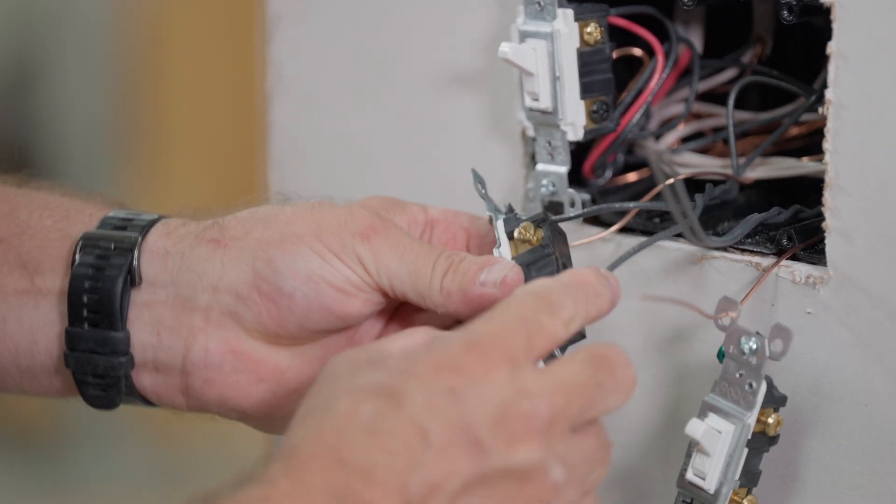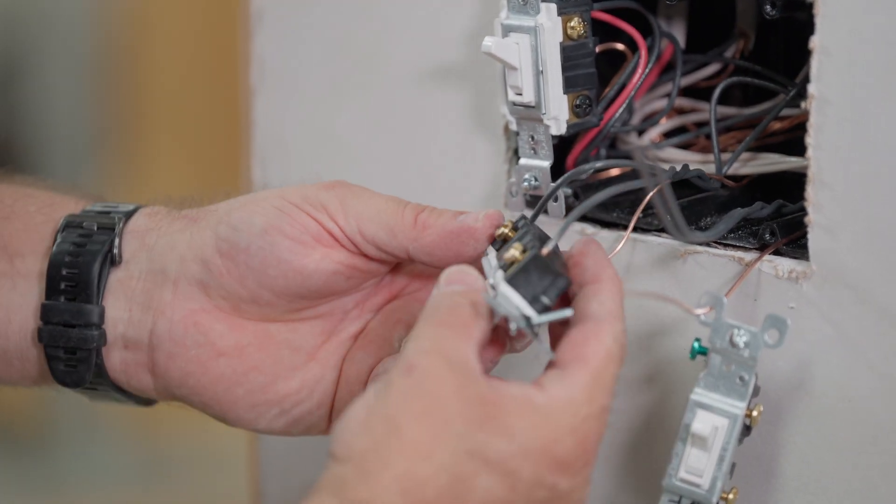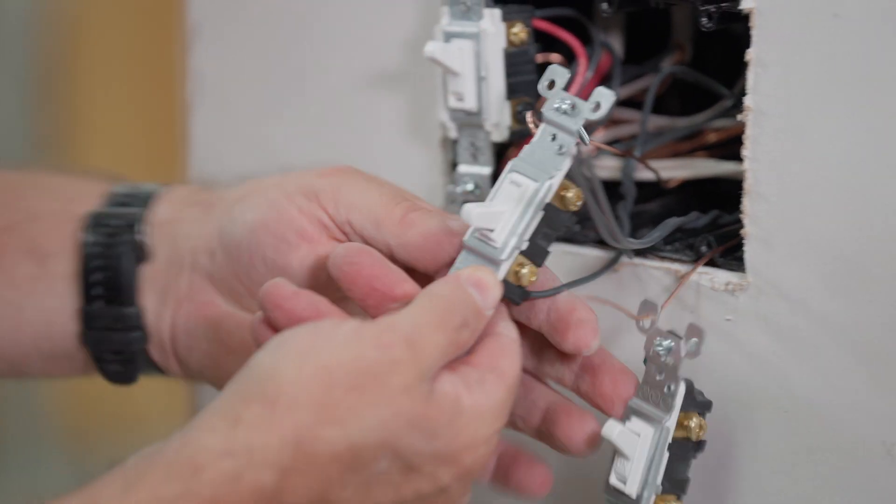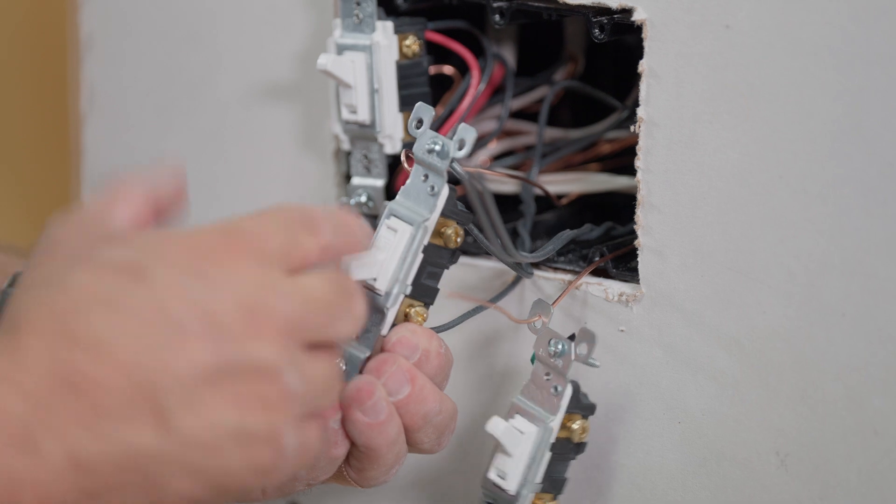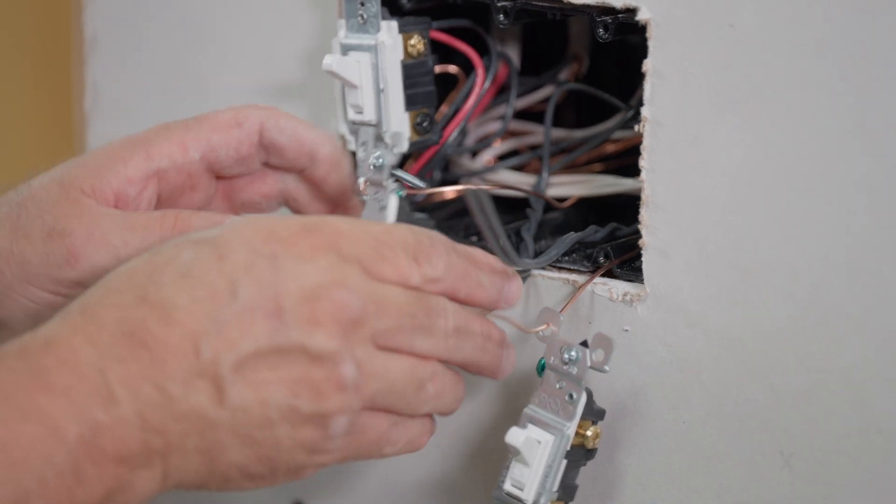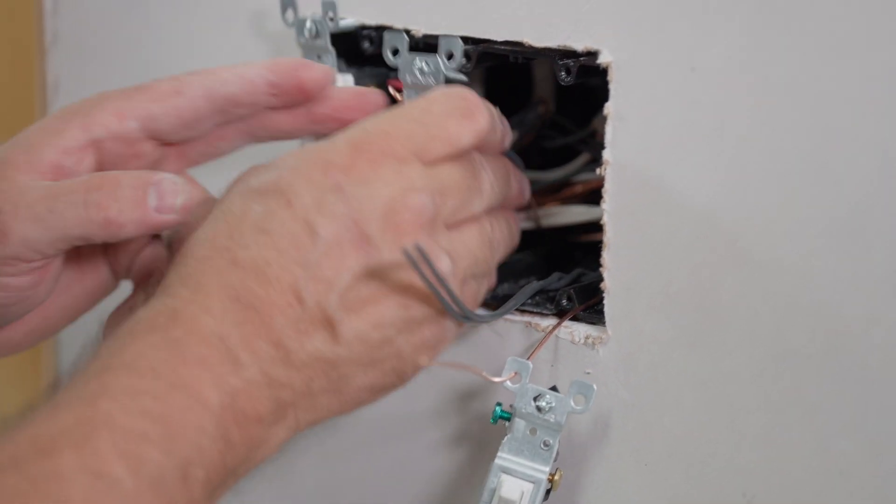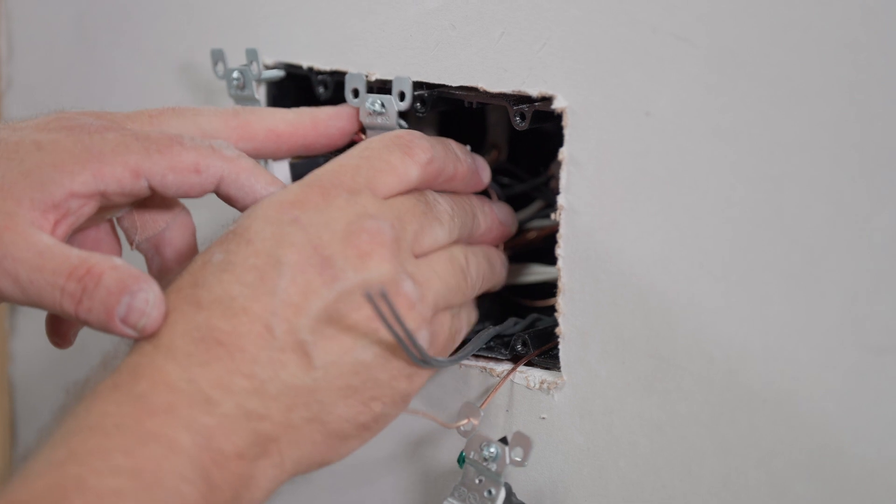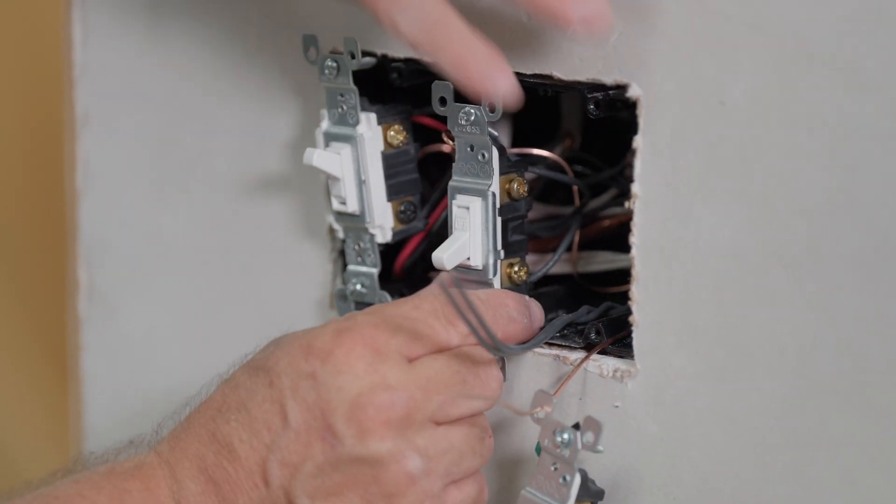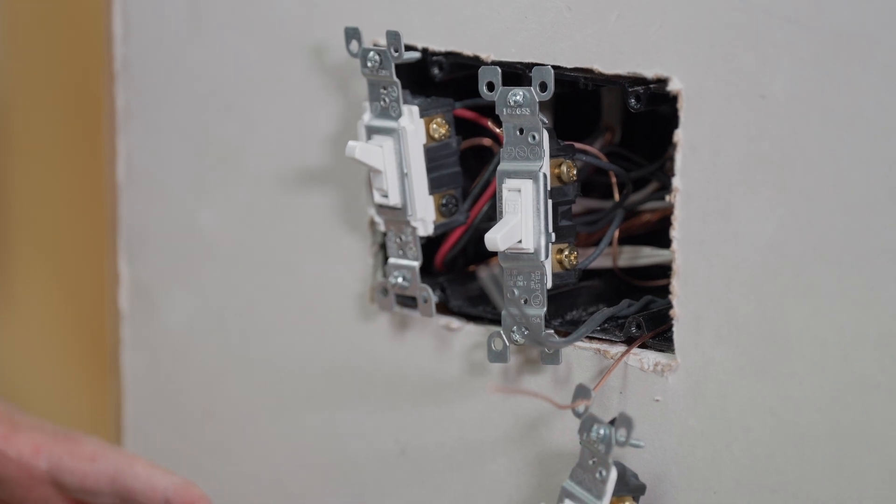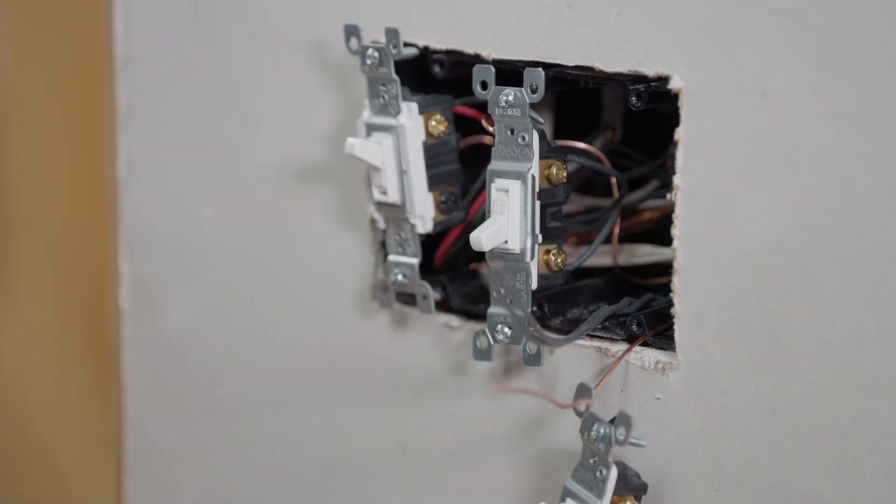As you can see, there's not really any wire showing. It's done the right length. Now we look at this and the switch will always say top. This says off. Obviously off is down. So we're going to push this right in here like this. And that's it. Making sure the ground wire is pushed way in back. You don't want that ground wire to touch any of those terminals.